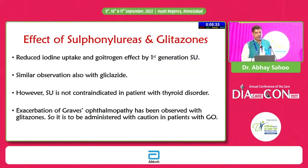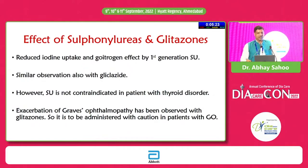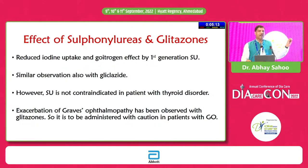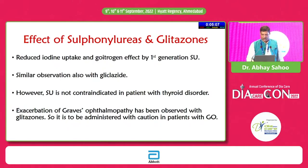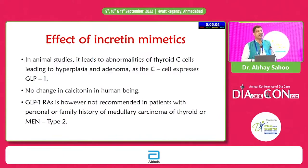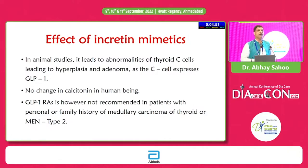Sulfonylureas and glitazones both reduce iodine uptake and have a goitrogenic effect with first-generation sulfonylureas, but second-generation sulfonylureas have no such effect. Glitazones similarly showed some absorption effects. However, sulfonylureas are not contraindicated in thyroid disorders. GLP-1 receptor agonists are not recommended in persons with familial history of medullary carcinoma of thyroid or MEN type 2, due to thyroid C-cell hyperplasia concerns.